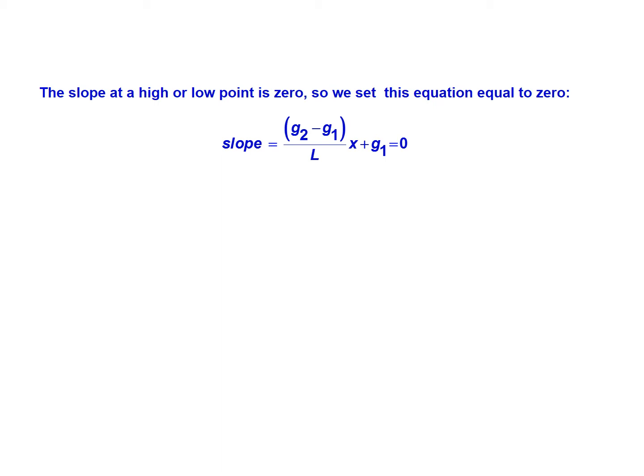So we'll set our slope equal to 0 because we want to find that high or low point. So g2 minus g1 over L multiplied by x plus g1 equals 0. And we're going to solve this for x to find the location of that either high or low point on the curve. So x equals negative g1 times L over g2 minus g1.